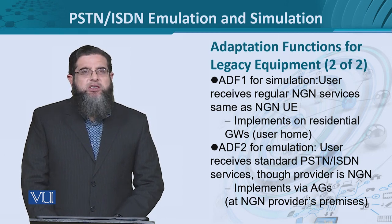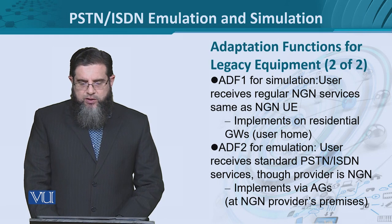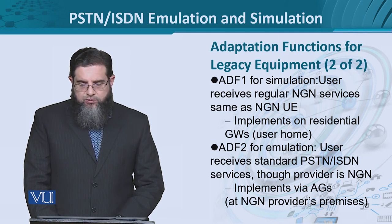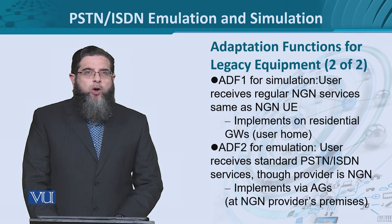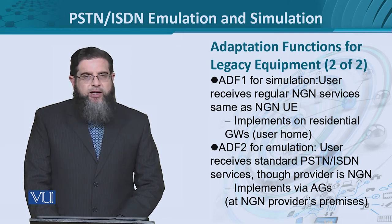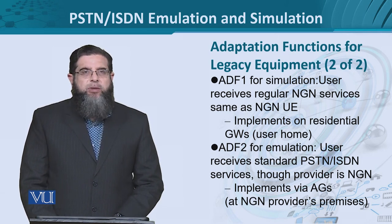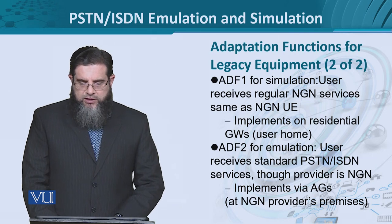As far as emulation is concerned, since we are interested in ensuring that legacy services are provided, the user receives standard services and some additional NGN services. The access gateway implements the adaptation functions and it is on the network side — meaning on the core side, the NGN provider's premises host the access gateway, which ensures NGN interoperability with the classical network.